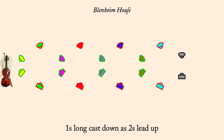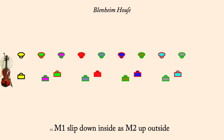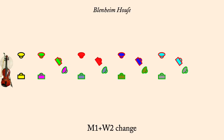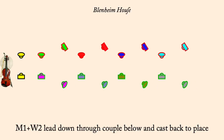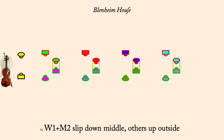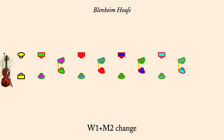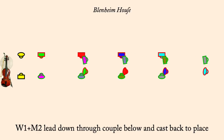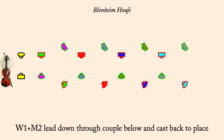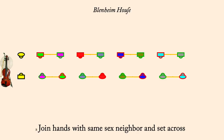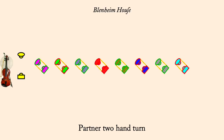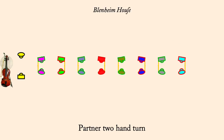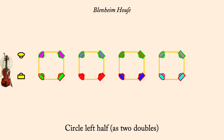Man one slip down, man two up. Man one, woman two change. They lead below next couple and cast back to place. Top couple slip down, bottom up. Woman one, man two change. They lead below next couple and cast back to place. Set. Turn single right. Partner two-hand turn. Circle left half. One's long cast down as twos lead up.